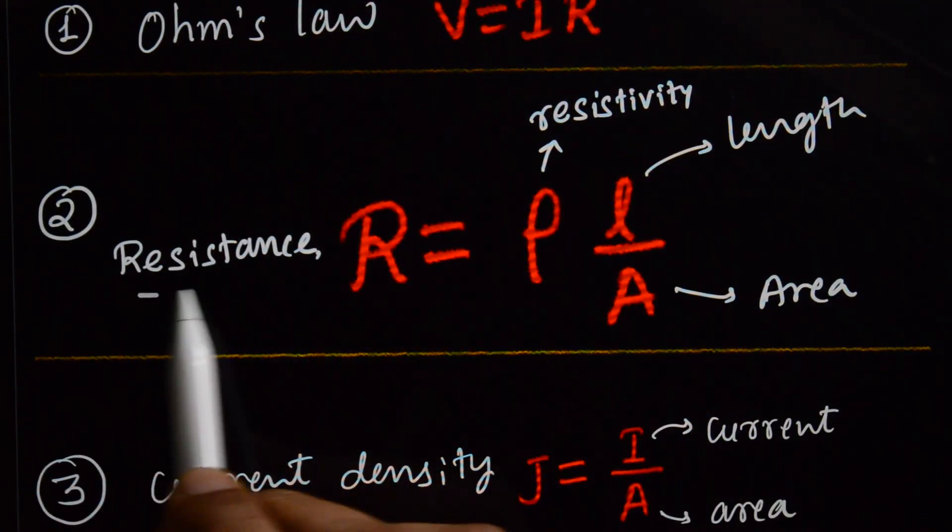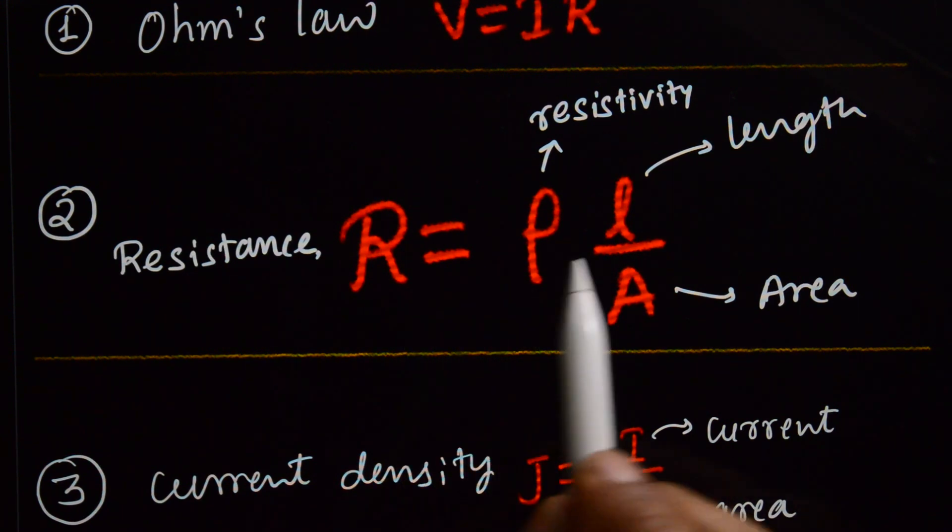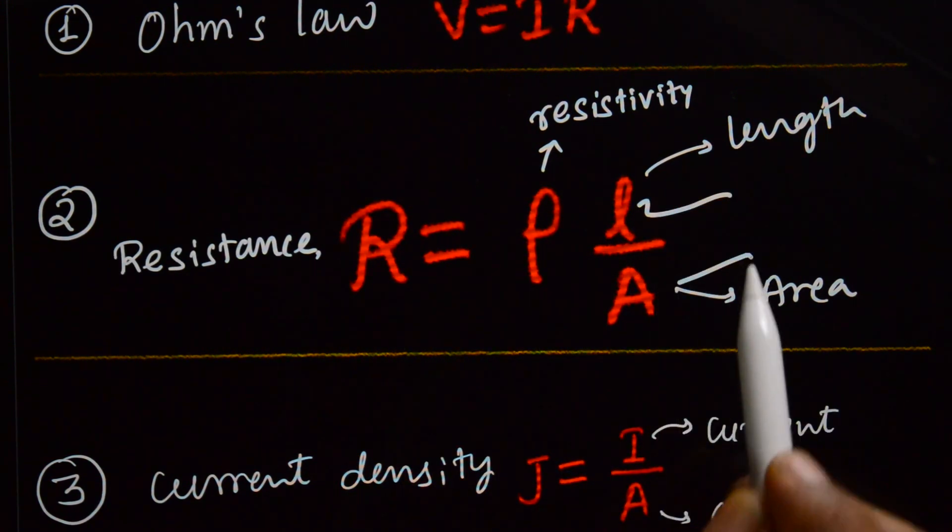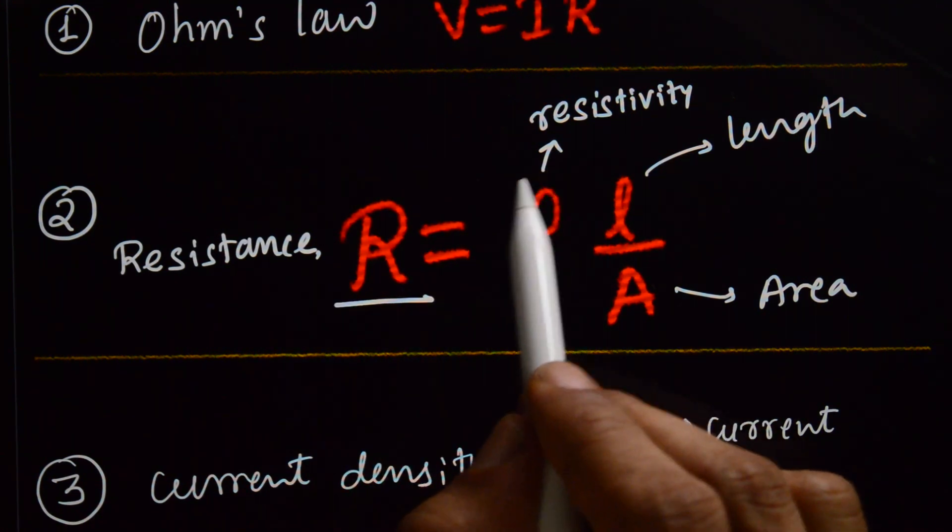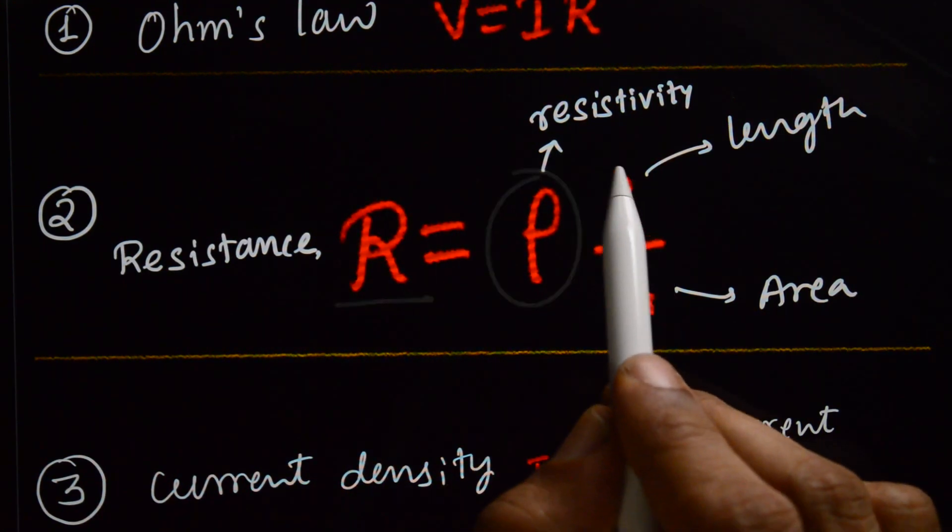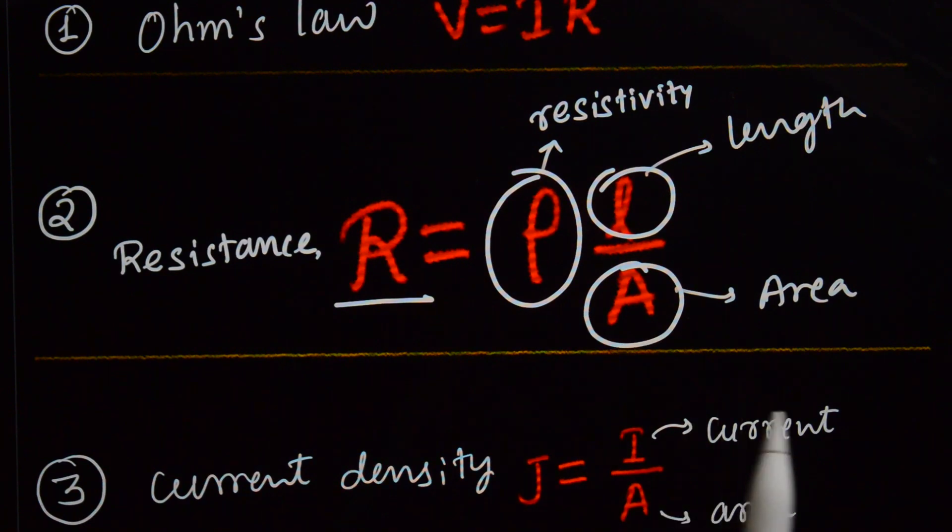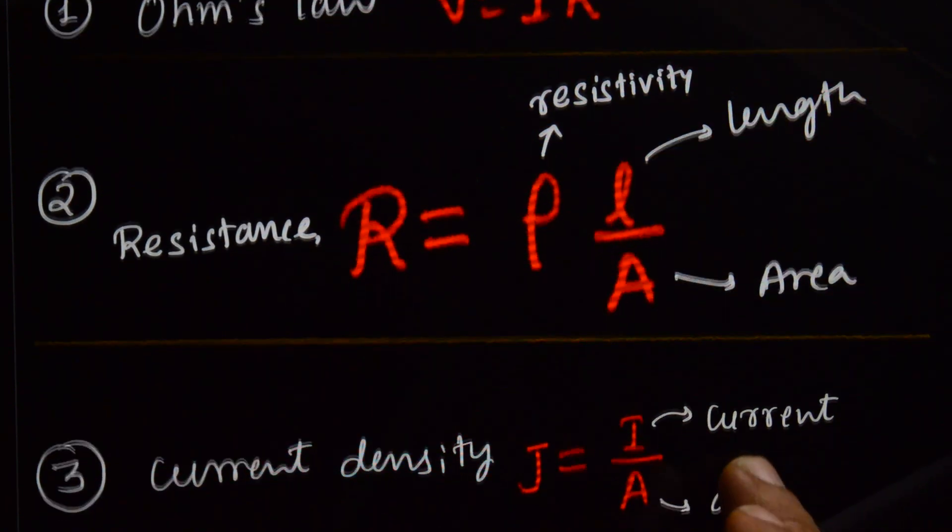Next thing is resistance formula in terms of its length and cross-section area, that resistance R is equal to resistivity into length divided by area, cross-section area of the conductor.